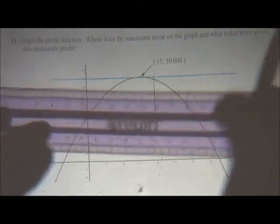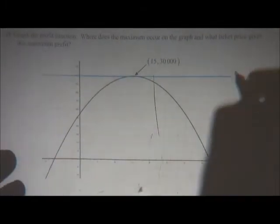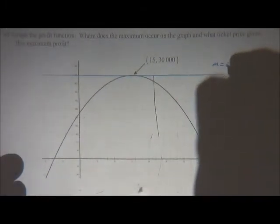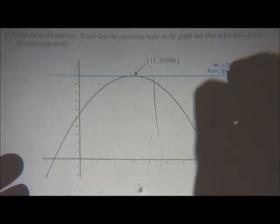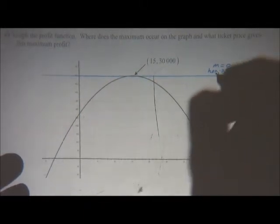But in this case, because it's zero, we have zero slope here, so the slope is zero, which indicates that it's a horizontal tangent.